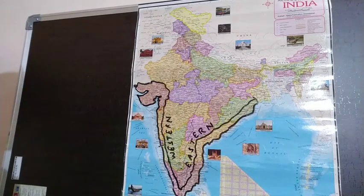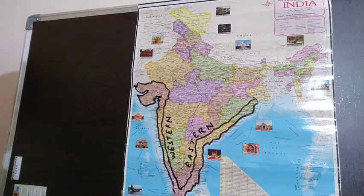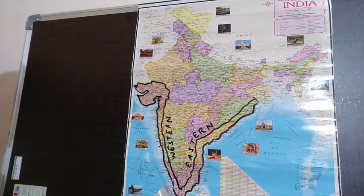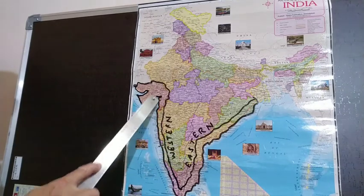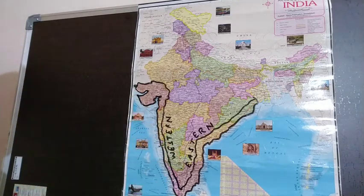In session 2 about the coastal plains of India, we have two coastal plains: western coastal plain and eastern coastal plain. In the last session we completed the western coastal plain. We will give a recap first — the western coastal plain starts from Gujarat all the way up to Kanyakumari.